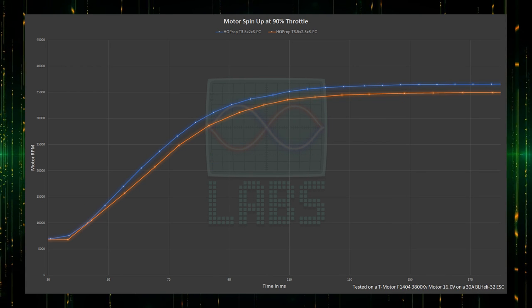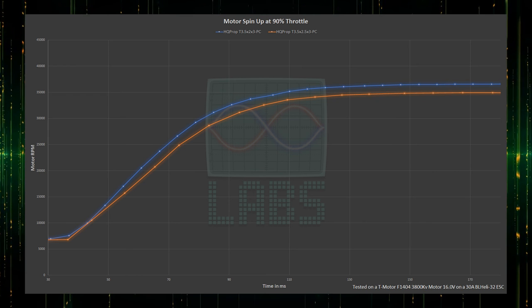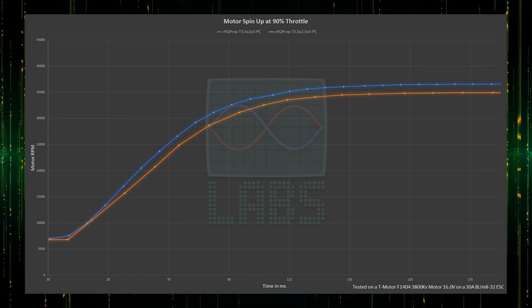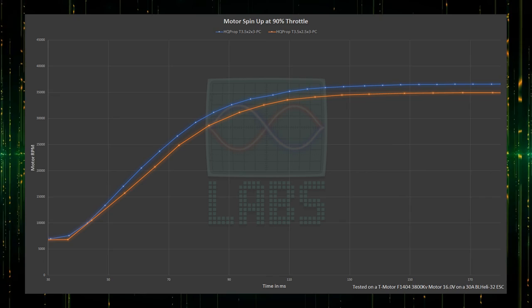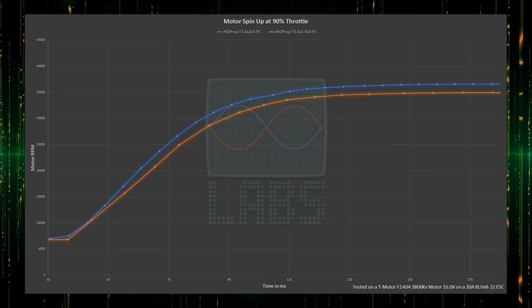If we take a look at the time it takes for the propeller to reach 95% RPM from idle, both propellers appear to be nearly identical to spin up to the respective RPM. So this means throttle response shouldn't be affected by the more aggressive pitch.